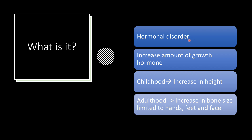Acromegaly is a hormonal disorder which develops when the pituitary gland produces too much growth hormone during adulthood. When there is too much growth hormone, our bones will increase in size. In childhood, this leads to an increase in height and is called gigantism. But in adulthood, a change in height will not occur; instead, the increase in bone size is limited to the hands, feet, and face, and it is called acromegaly.